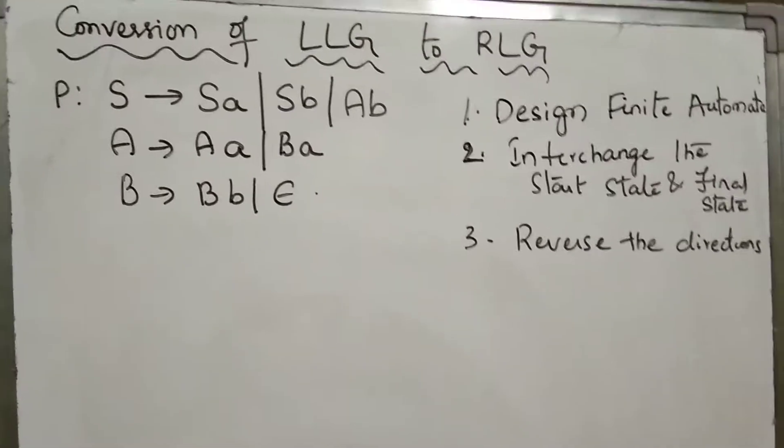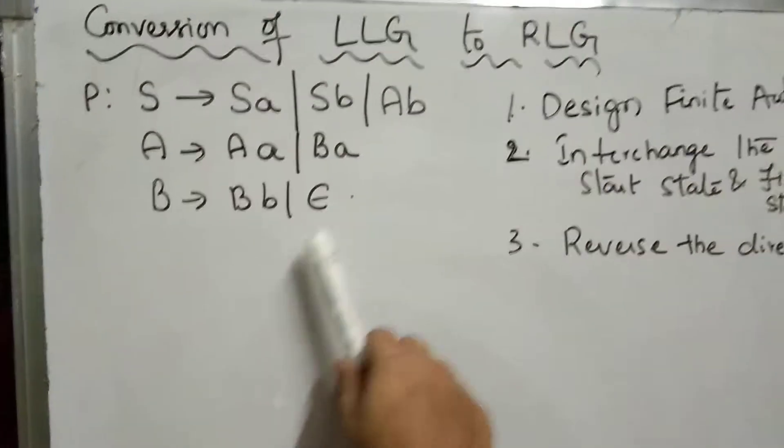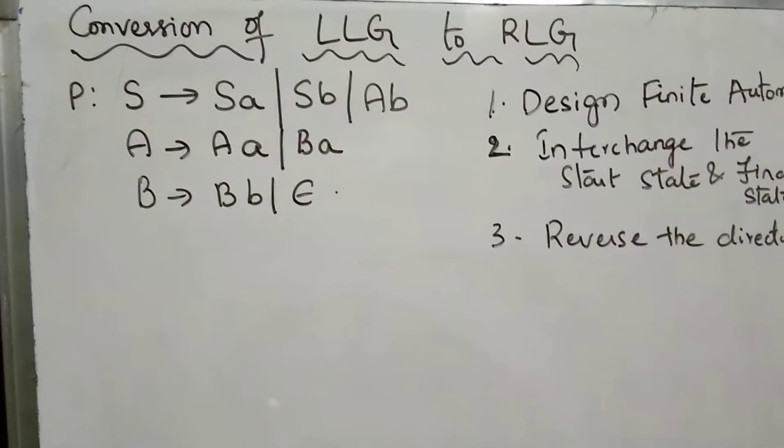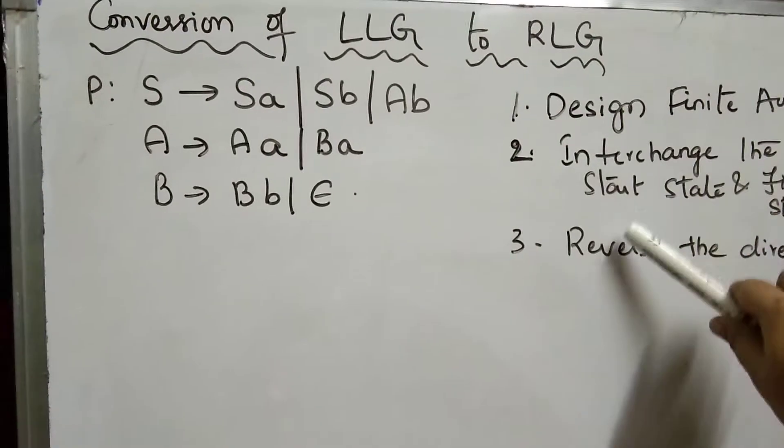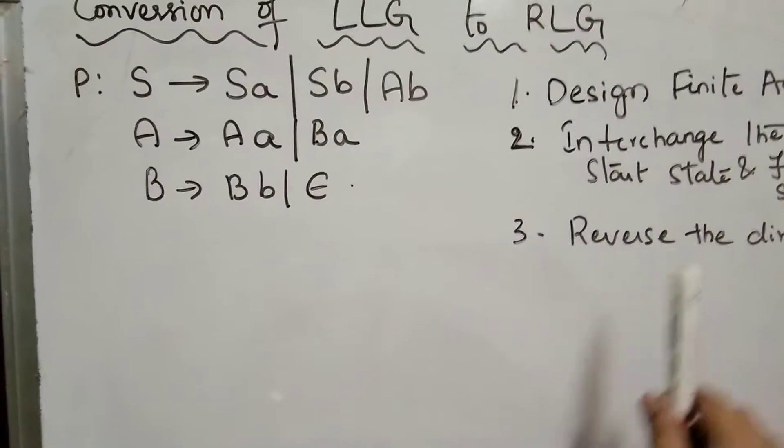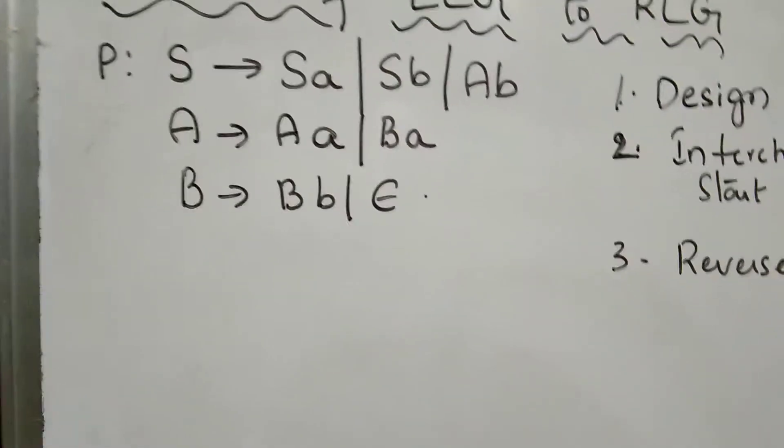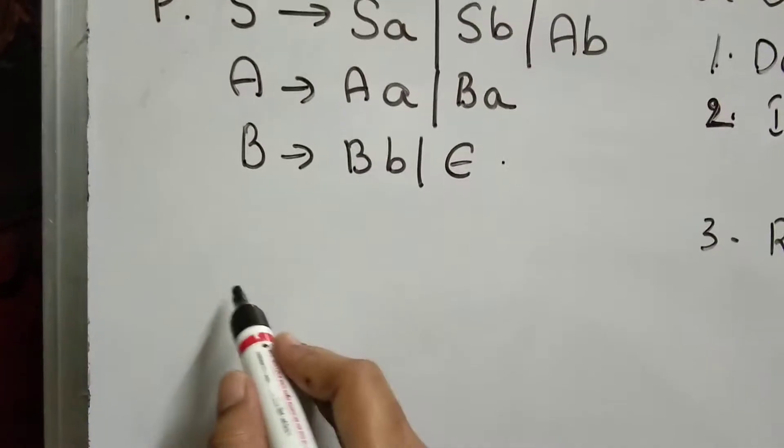These are the rules. To convert left linear grammar to right linear grammar, first design finite automata for the grammar, interchange the starting state with final state, and reverse the directions. Let us design finite automata for this.